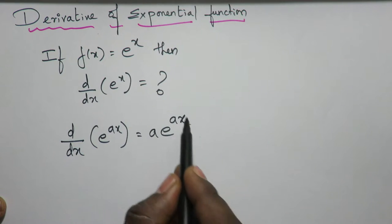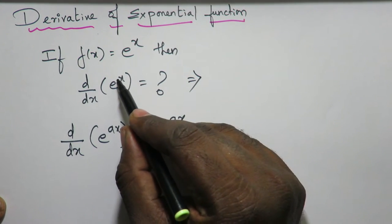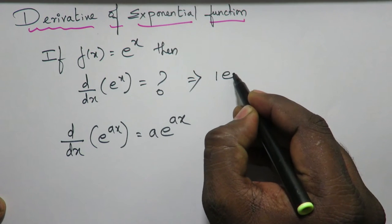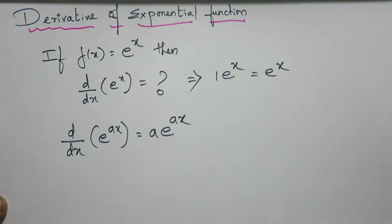Now let's come back to this. What is a here? It's 1. So the answer is 1 times e^x, which equals e^x.